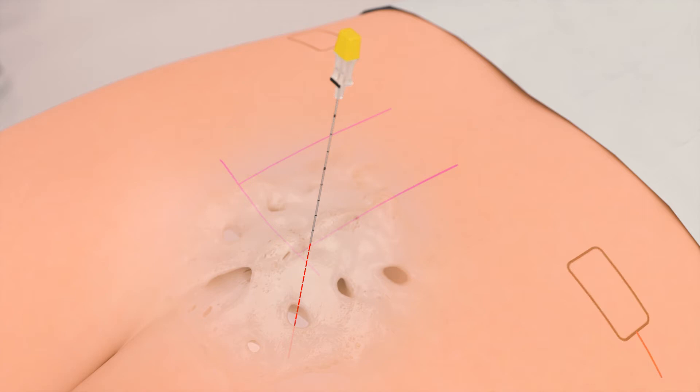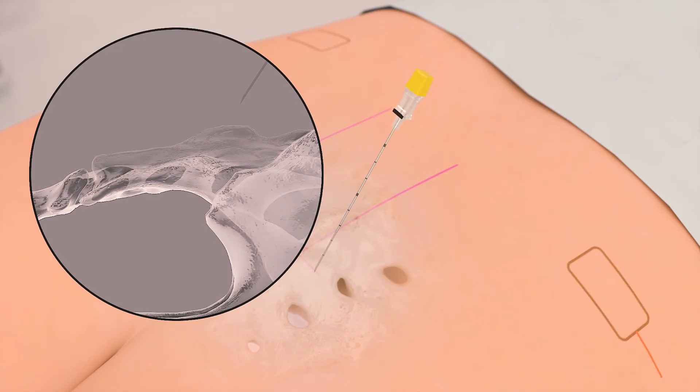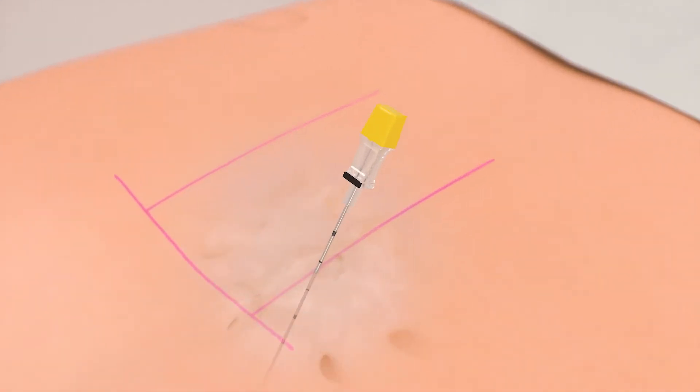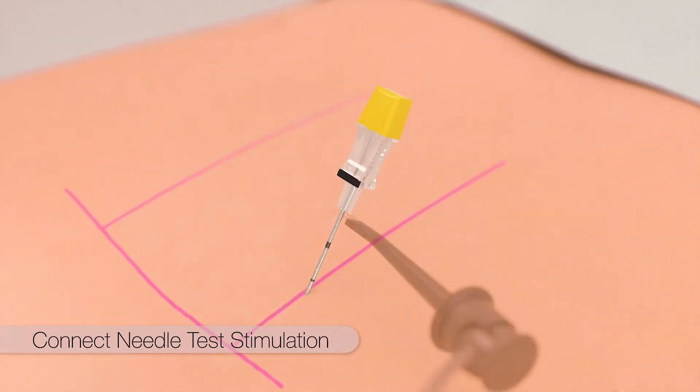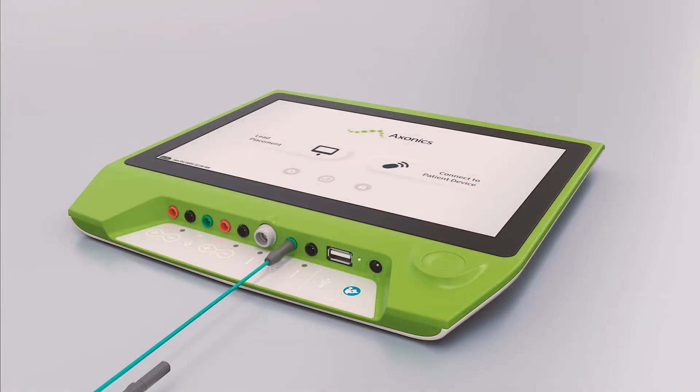Once the foramen is accessed, gentle movement is used to advance the foramen needle such that the tip of the needle is located just at the anterior surface of the sacrum. The needle test stimulation cable is clipped to the uninsulated portion of the foramen needle and the other end of the cable is connected to the clinician programmer.